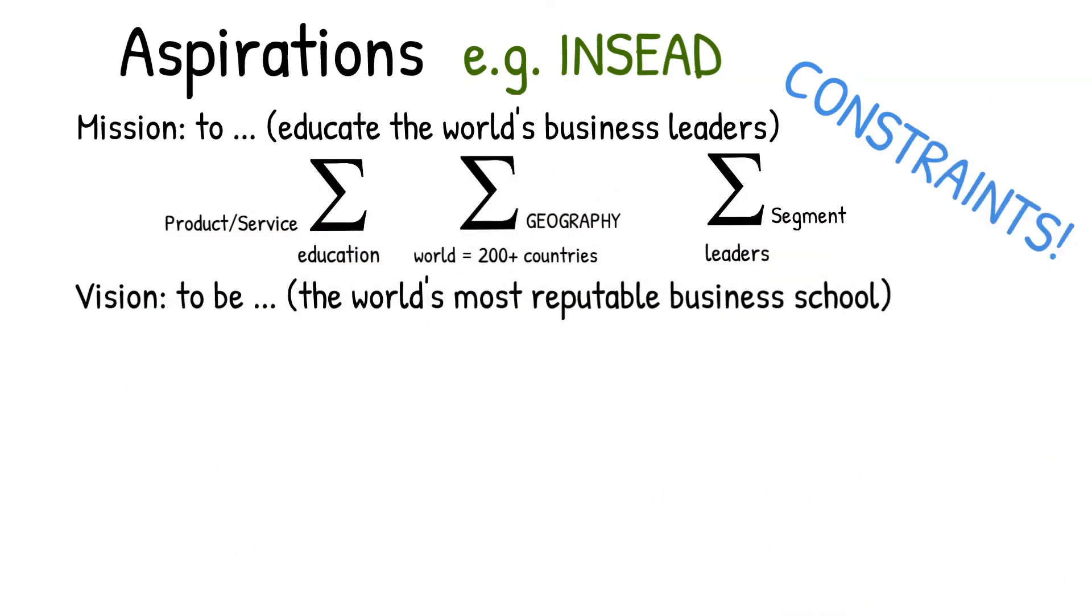The second component of aspirations is typically the vision. This is a forecast of the future. And in INSEAD's case, we might have a vision like to be the world's most reputable business school. Pause the video for a second. Look at the previous slide and then ask yourself, how does this vision meet or intersect with the equation?